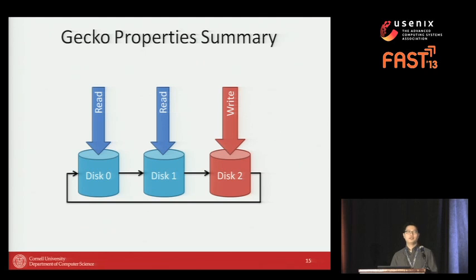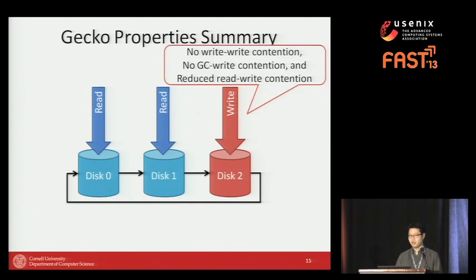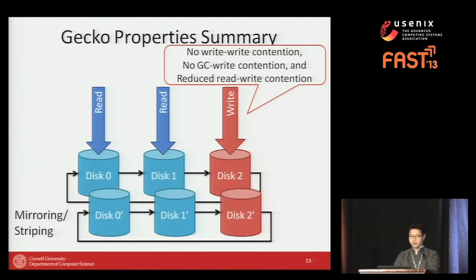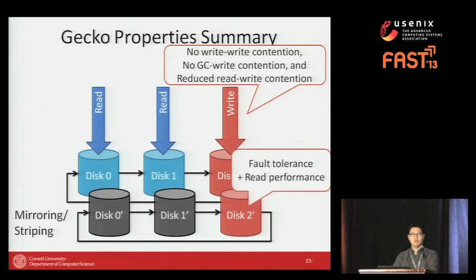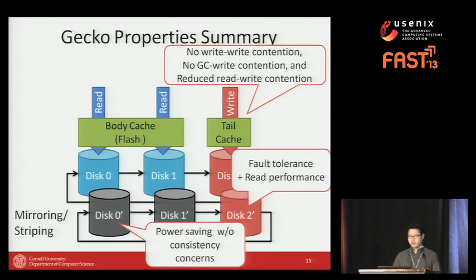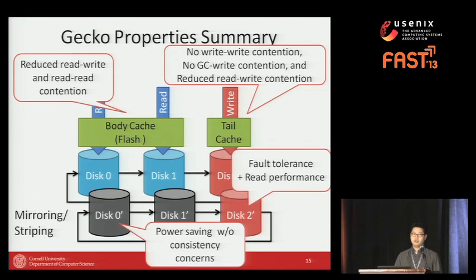To summarize Gecko's properties: we use a chain logging scheme, which resolves write-write contention and reduces read-write contention. With multiple disks in modern servers, we can mirror or stripe these chains for higher fault tolerance and read performance. Chain logging also enables power saving almost for free — we can turn off disks 0 and 1 without consistency concerns, since all updates go to the tail drive. The caching scheme reduces write-read and read-read contention inside the disks.